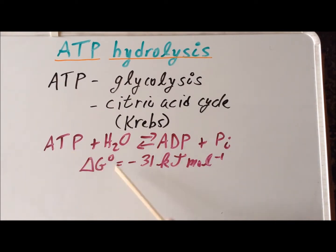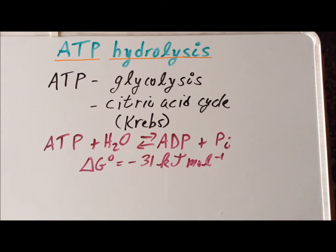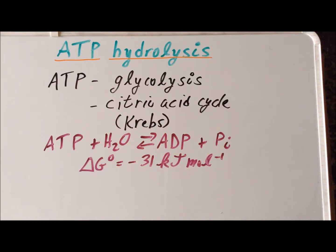The standard Gibbs free energy — written as G with a superscript zero, sometimes called delta G naught — takes place under so-called standard conditions, where the concentration of each reactant is one molar and the concentration of any gases involved is one atmosphere. Since the standard Gibbs free energy is a negative quantity, under standard conditions this reaction is going to be spontaneous.